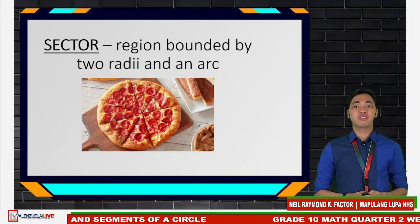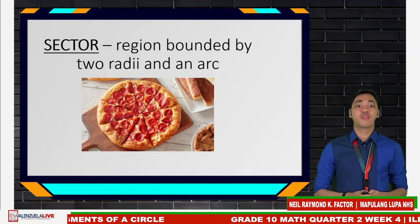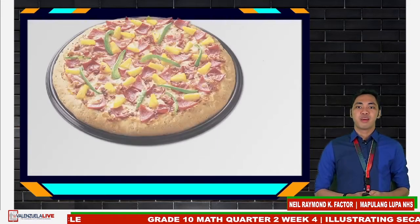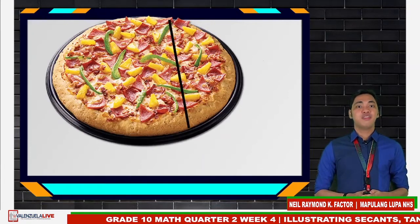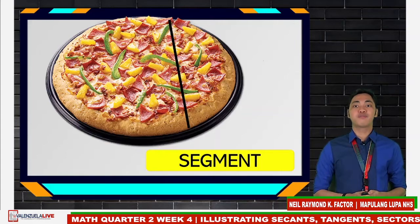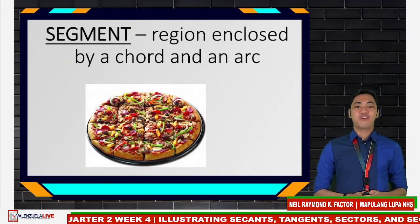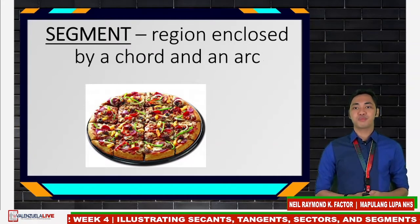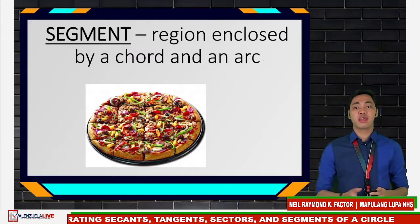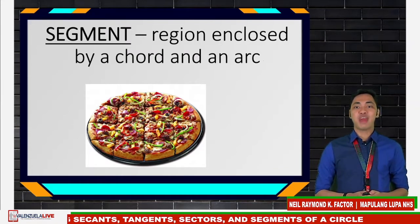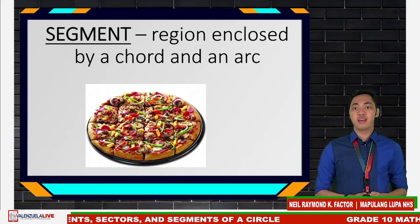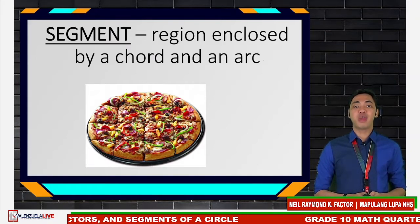Let's first have the usual cut. The part that is shown is called a sector — the pizza slice. A sector is a region bounded by two radii and an arc, so we are talking about the inside portion. Another cut is like this: in this case, we formed a segment of a circle — that can be produced with the barcada cut. A segment is a region enclosed by a chord and an arc. Just look for a chord and an arc. Let me emphasize that sector and segment are regions. The boundaries for a sector are two radii and an arc, while for a segment, we have a chord and an arc.